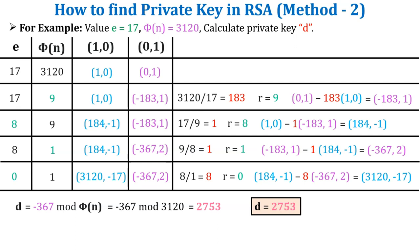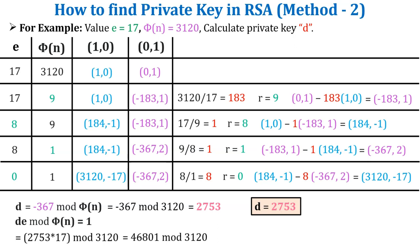As per my suggestion, before considering this value as the private key, verify it using the equation d × e mod phi(n) = 1. Here d = 2753, e = 17, and phi of n = 3120. So 2753 × 17 = 46801, and 46801 mod 3120 = 1. We get the value 1, so the private key is verified. This is all about method 2.